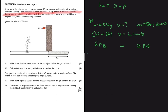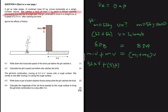Setting up the momentum equation: before catching the brick, we have the mass of the girl multiplied by her velocity, plus the mass of the brick multiplied by its velocity. The mass of the girl is 52 kg, her initial velocity is unknown. The mass of the brick is 5 kg, and its horizontal velocity before being caught is zero. So that term drops out.